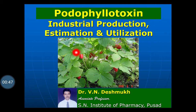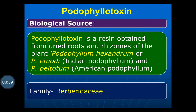In this picture you can see the plant, the herb of the podophyllotoxin. Podophyllotoxin is a resin obtained from the dried roots and rhizomes of Podophyllum hexadrum or Podophyllum emodi, and Podophyllum peltatum — the American podophyllum — family Berberidaceae.